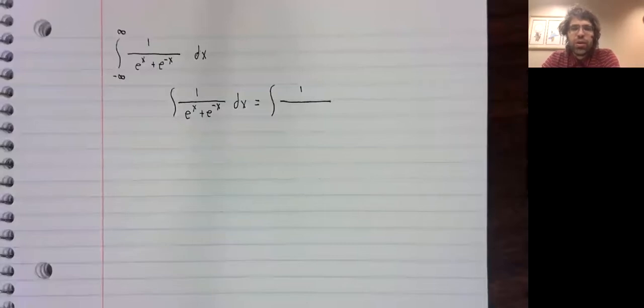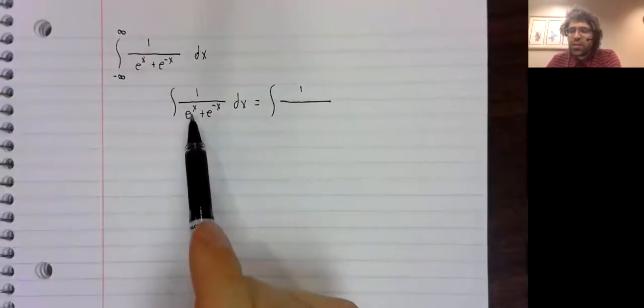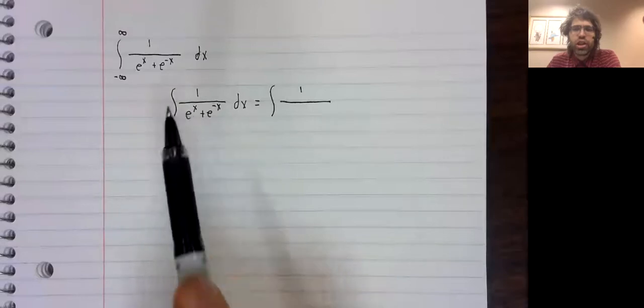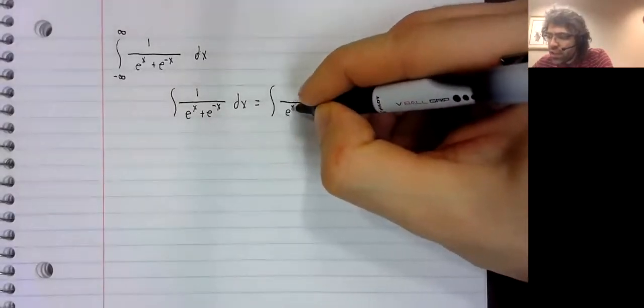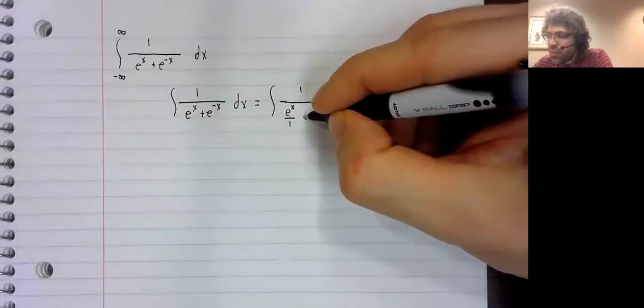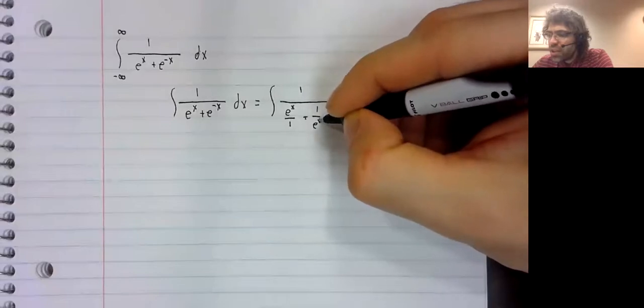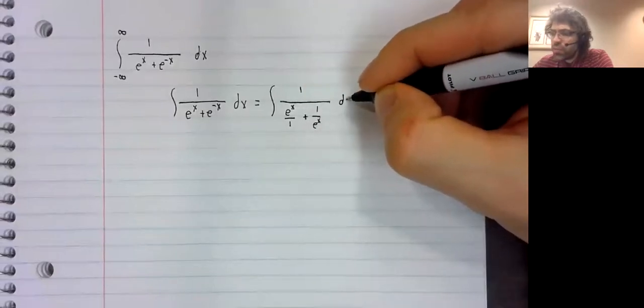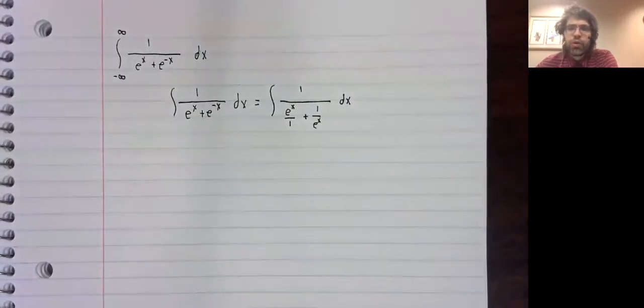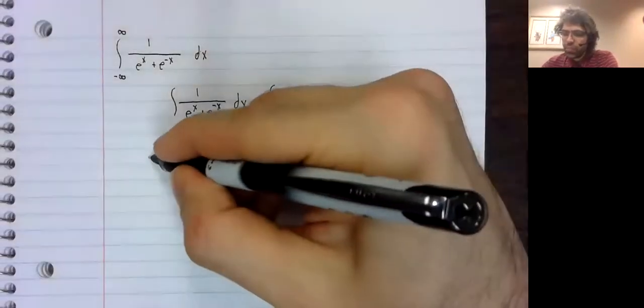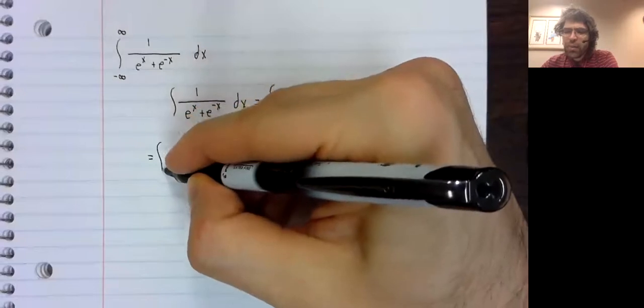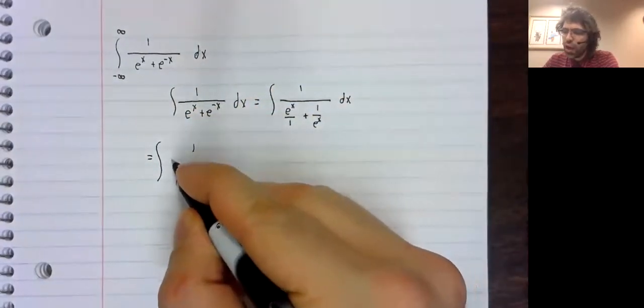And the only thing that's coming to mind for me is that this is a sum of fractions. It's not written that way, but it is one. And if we're adding fractions together, sometimes it's helpful to find a common denominator and actually do the addition. So lacking any better idea, let's try that.